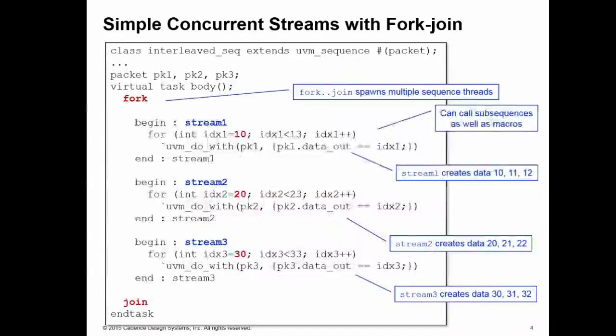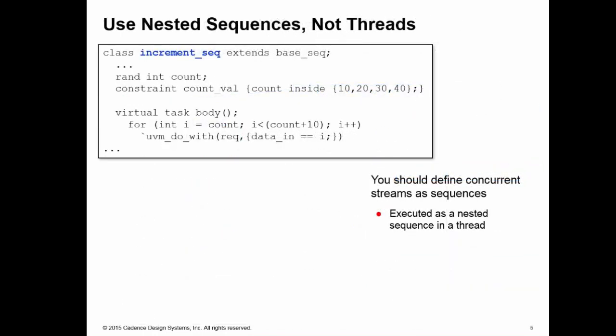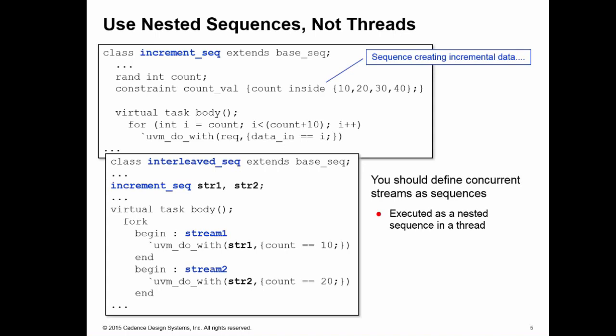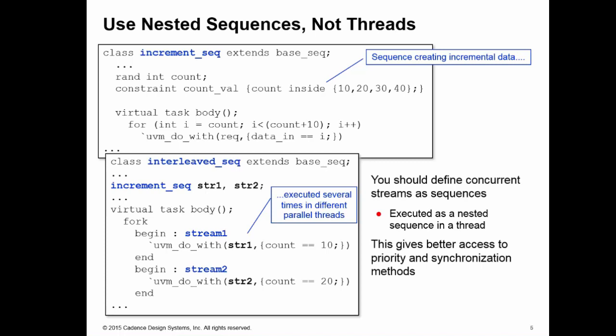Instead of using the do macros, we could call sub sequences, and that's actually a far better solution. We'll replace the do macro with a nested sequence call called increment sequence. Increment sequence will count up data values. We define the starting value using the sequence property count, which is randomized, and we use a constraint to give us a variety of starting values from 10 to 40. This is a far better solution because it gives us much more control of the sequence items in terms of their priority, synchronization, and arbitration.